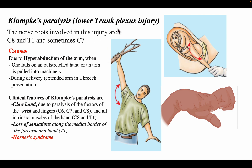The next clinical correlation is Klumpke's paralysis, a lower trunk plexus injury. The nerve roots involved are C8 and T1, and sometimes C7. It is caused by hyperabduction of the arm when one falls on an outstretched hand, or the arm is pulled during machinery work, or during delivery in extended arm breech presentation. The clinical features include claw hand due to paralysis of flexors of the wrist and fingers, and loss of all intrinsic muscles of the hand supplied by the ulnar nerve with root values C8 and T1. There is also loss of sensation along the medial border of the forearm and hand.